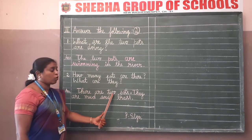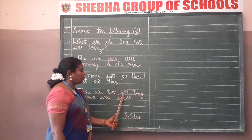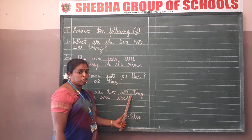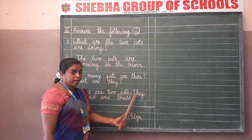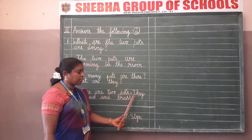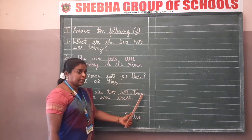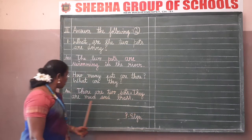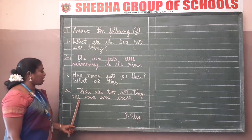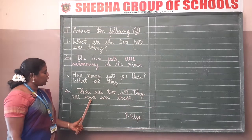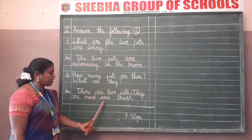Two - T-W-O. Pots - P-O-T-S. Full stop. Again you have to start writing with the capital letter. They - T-H-E-Y. Mud - M-U-D.